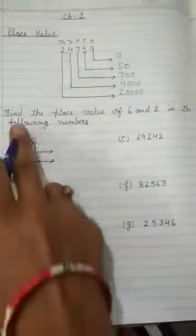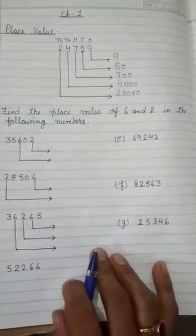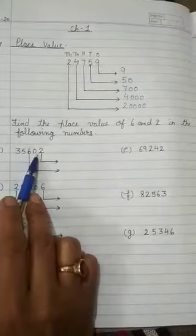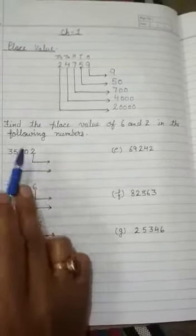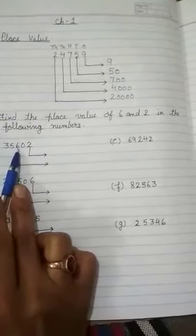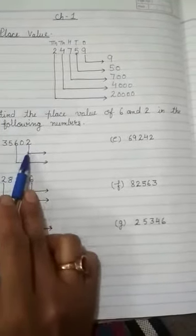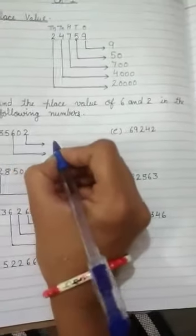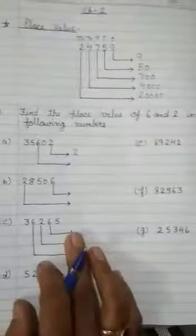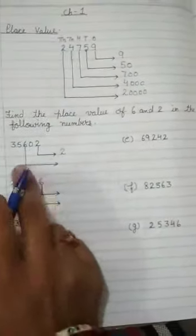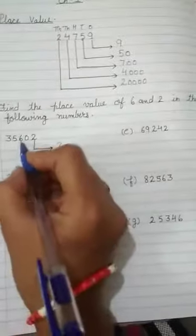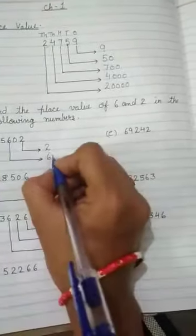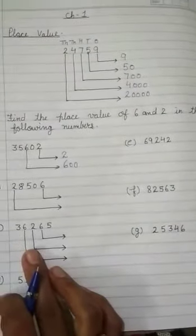Now our next question is find the place value of 6 and 2 in the following number. Your first question is 35602. In this number, you have to find only the place value of 6 and 2. So we will draw an arrow like this and write here 2. 2 is on 1's place, so there is no need of putting any 0. After this, we will write here 6, and after 6 there are 2 digits. That's why we are writing here 2 zeros.